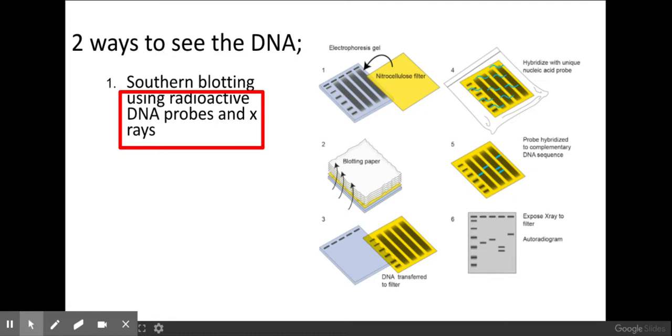So the first thing you can do is use a process called southern blotting, where you use radioactive DNA probes and x-rays to see the actual DNA. Now anything in a red box here is taken directly from the mark scheme.